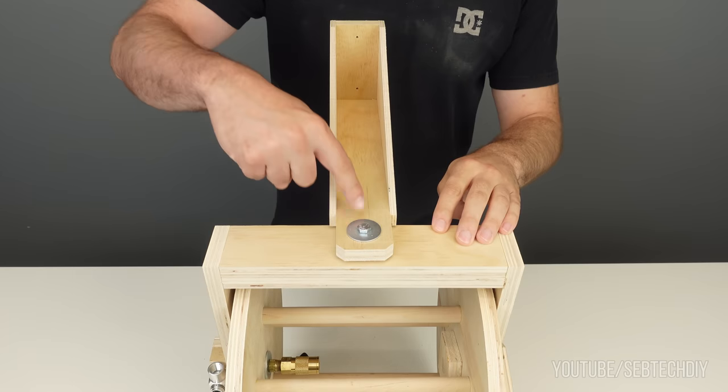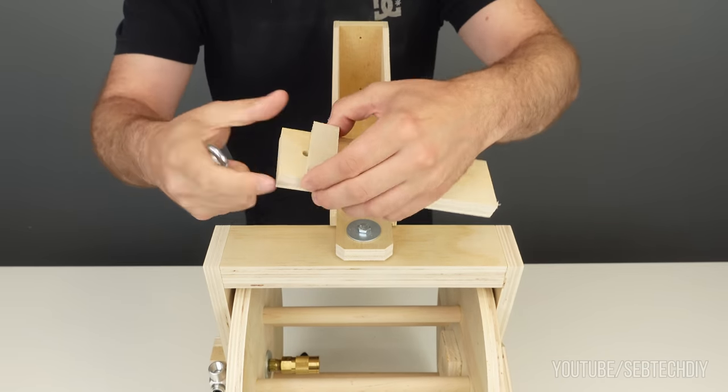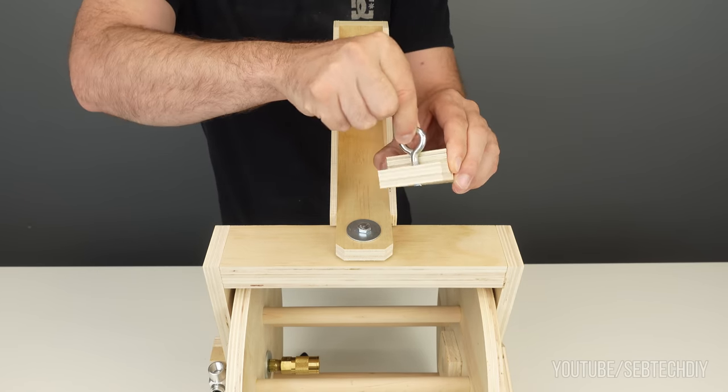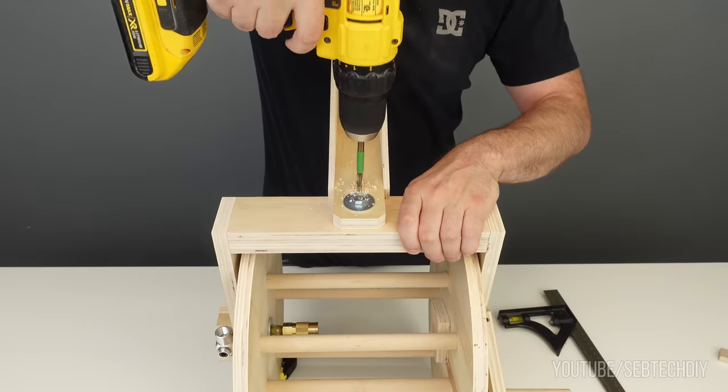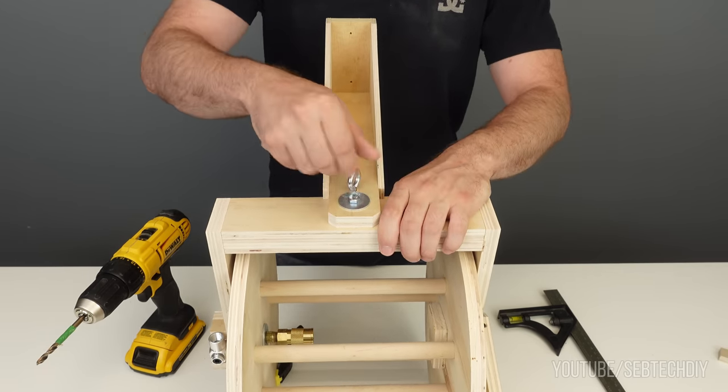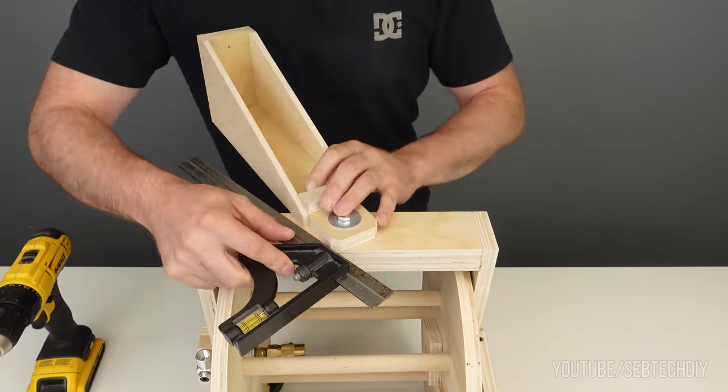Alright, so now the reel can swivel 360 around, but what if I want to lock it in a certain position? My idea here is to make five holes between the wall bracket and the top of the reel support, so I can put an eye bolt in the hole to lock the reel in position. If I want it to turn freely, I turn the eye bolt and now the eye bolt sits on a little piece of plywood that I added to the wall support.